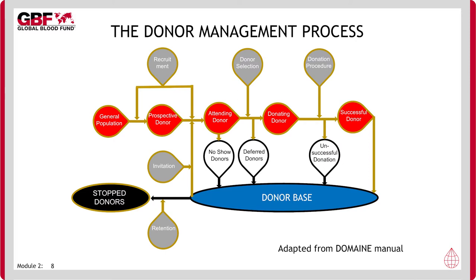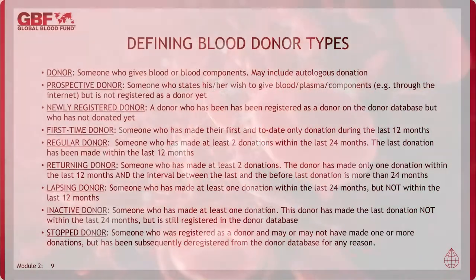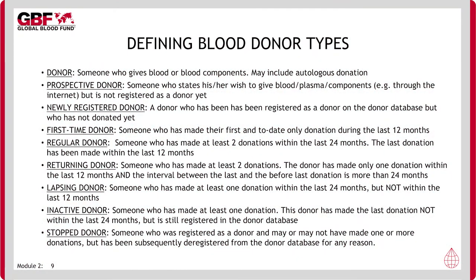Many donors will do this for years or even decades, embedding blood donation as a key aspect of their lifestyle and even personal identity. Finally, in black is where donors will eventually end up as a stopped donor. This may be due to permanent deferral, retirement due to age ineligibility, or some serious life event. The potential lifetime value of a donor will obviously depend on age at the time of recruitment. Most organizations will have developed their own definitions for what they may consider to be, for example, recruited or lapsed donors.